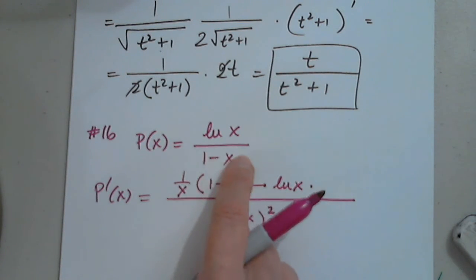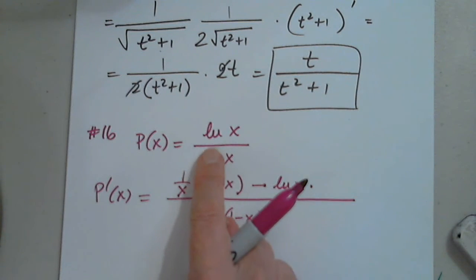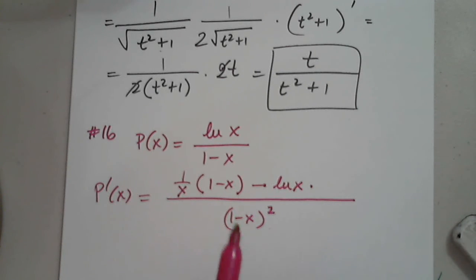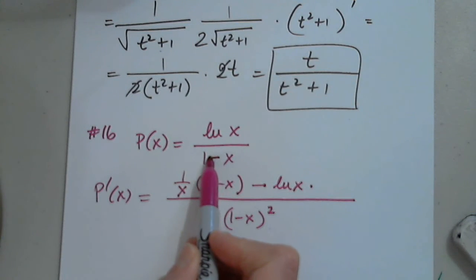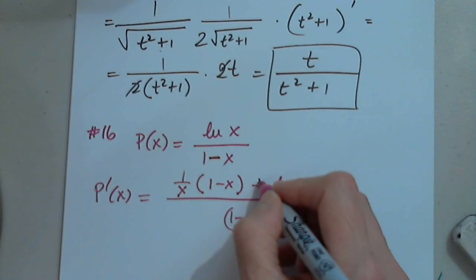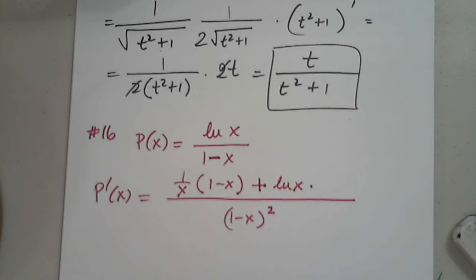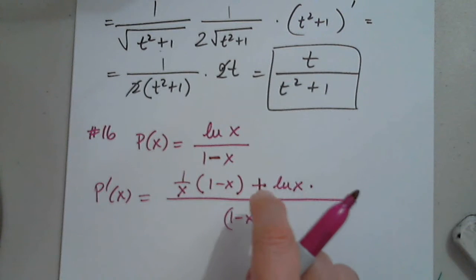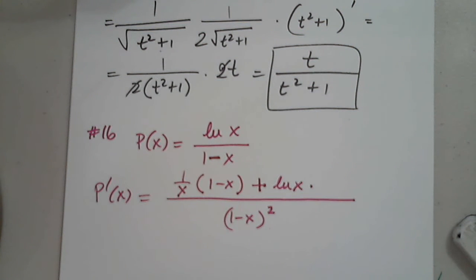How much is the derivative of the denominator? Is it just 1? Careful — it's negative 1. So I should have written negative 1, but I can change the sign to positive by rearranging.